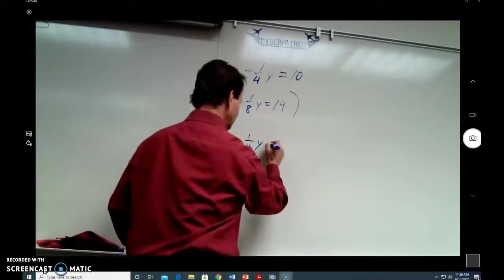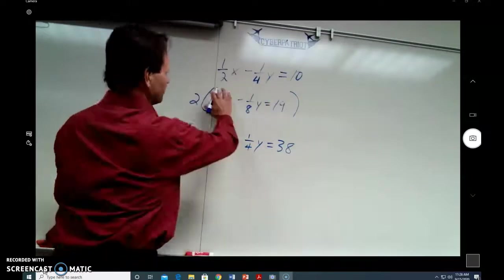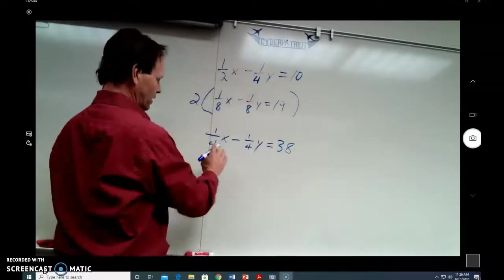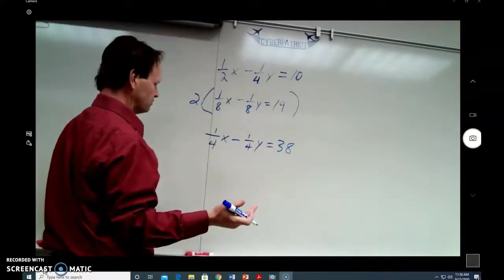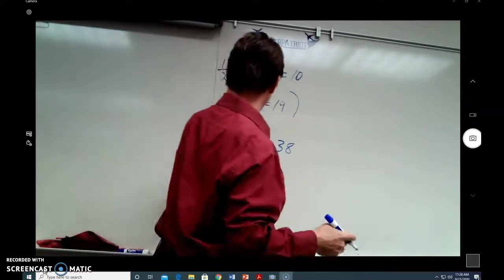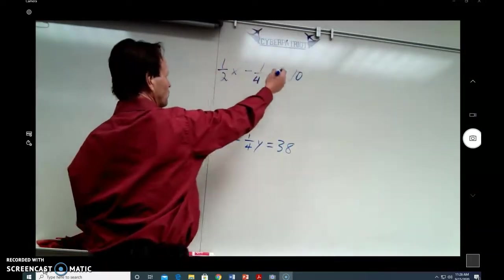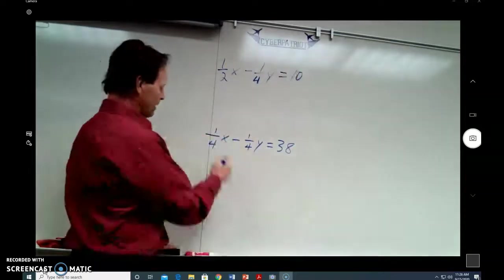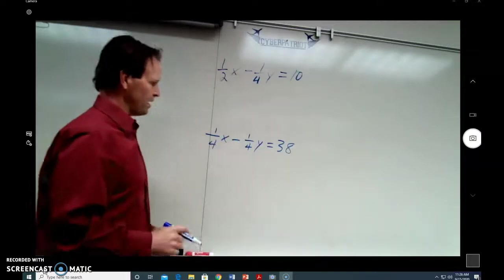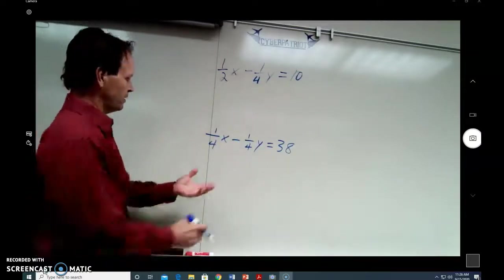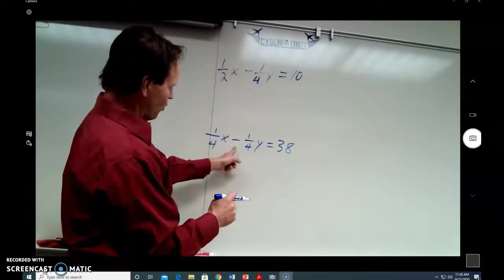And 2 times 19 is 38. So, I've multiplied this entire equation by 2 and created this equation, this equation, and that equation are equivalent, and so I'm going to get rid of my original. So, now I have 1 half x minus 1 fourth y equals 10, and 1 fourth x minus 1 fourth y equals 38. And you can see what I've done.